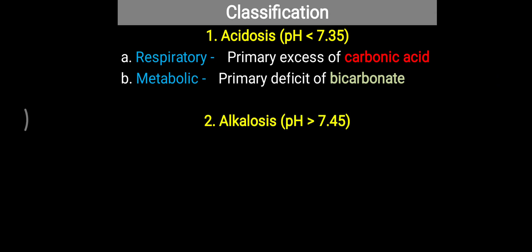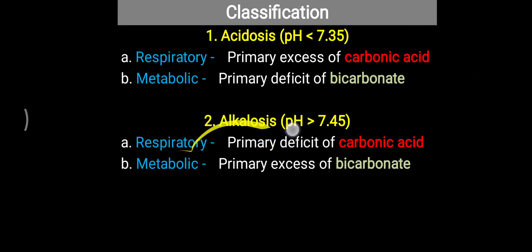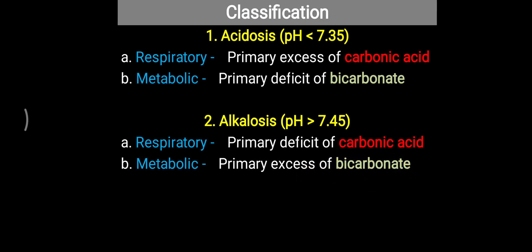Another type of acid-base disturbance is alkalosis, in which pH is more than 7.45. Here, hydrogen ion concentration is decreased, and again it is due to two conditions — respiratory or metabolic. In respiratory alkalosis, there is a primary deficit of carbonic acid: excessive elimination of carbon dioxide occurs, leading to less carbonic acid. In metabolic alkalosis, there is a primary excess of bicarbonate, due to excessive loss of acid from the body.